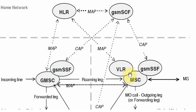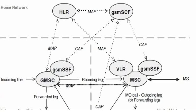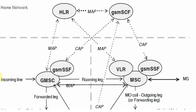On the visited network, VLR is connected with HLR on mobile application part, and the SSF function of MSC is connected to SCF on CAMEL application part. There is also a roaming link between GSM-SC and MSC for calls.